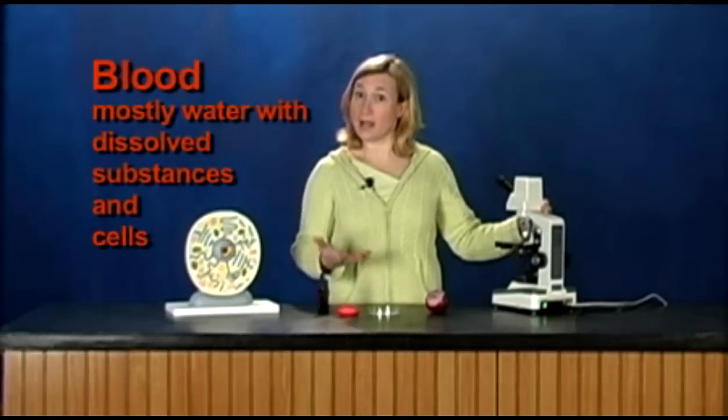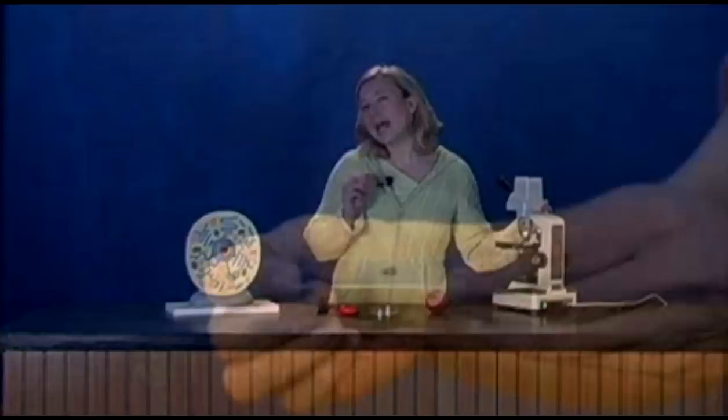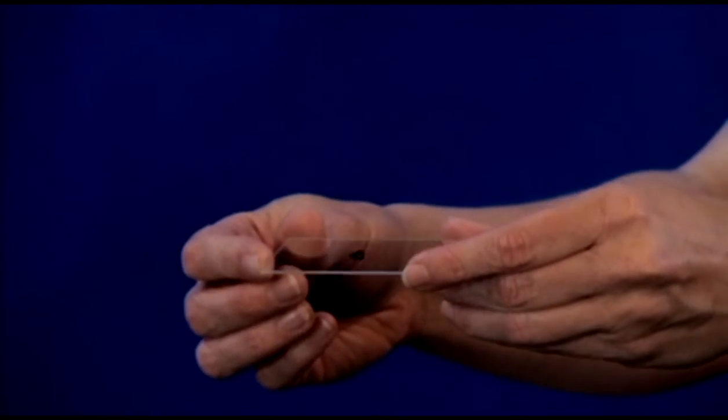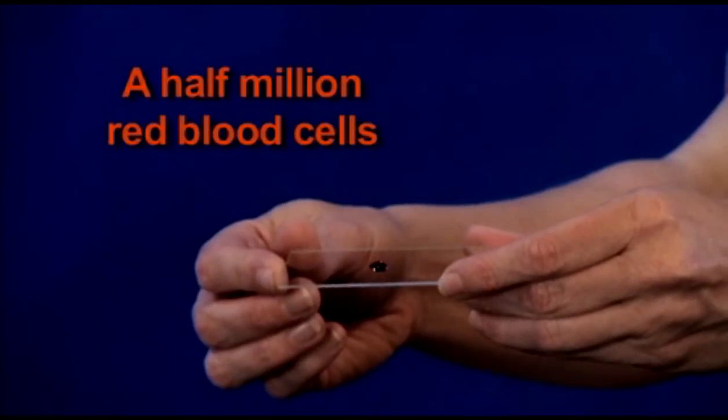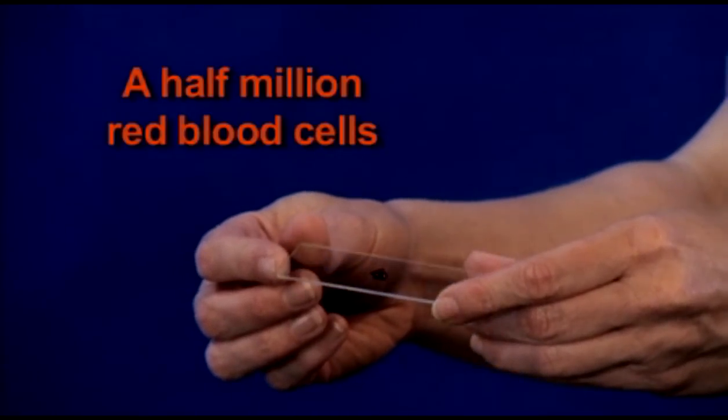Blood is mostly water with dissolved nutrients and cells. If you had a tiny drop of blood, about the size of a pinhead, you would have about half a million red blood cells.